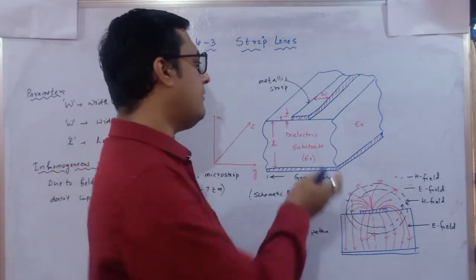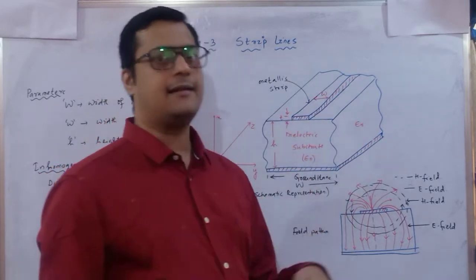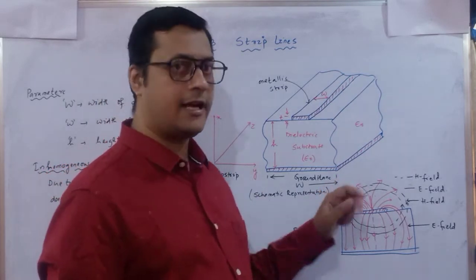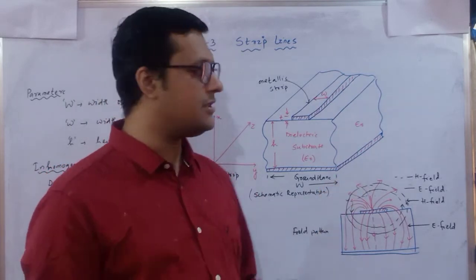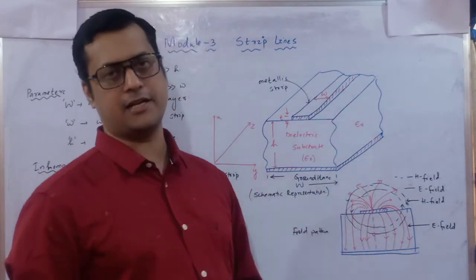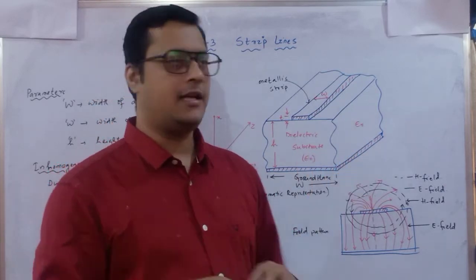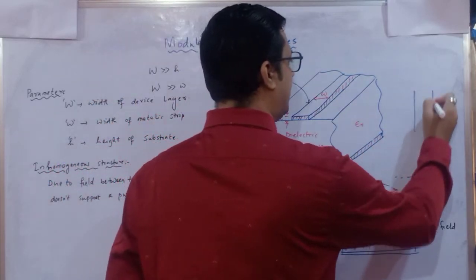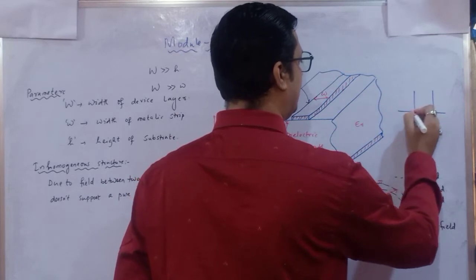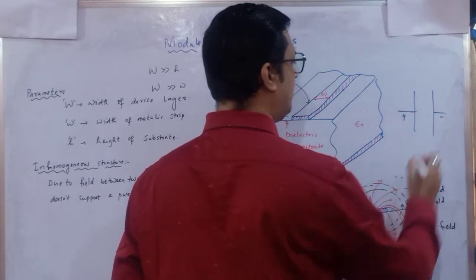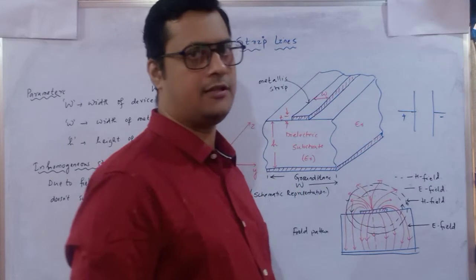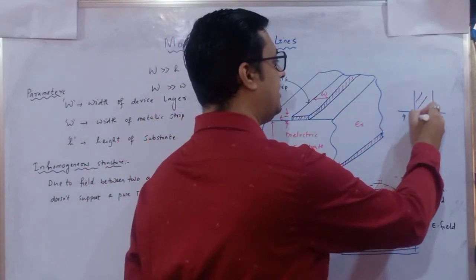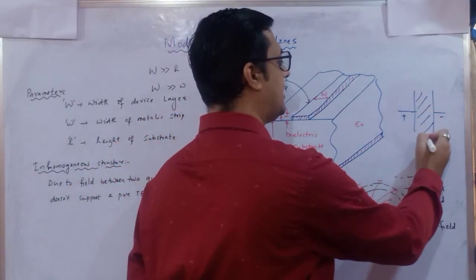When energized, the ground plane acts as the negative terminal and the metallic plate receives the positive potential. This is like a parallel plate capacitor: the top plate is connected to the positive terminal, the bottom plate to the negative terminal, and the medium between them is the dielectric with permittivity epsilon r.